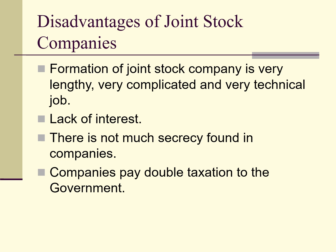Companies pay double taxation to the government, which is a major disadvantage. The company pays taxes after declaring its profit, and then distributes dividends to shareholders. When shareholders file their tax returns, they also have to pay taxes on those dividends. So the dividend is effectively double taxed. A dividend is the part of the profit distributed to shareholders.